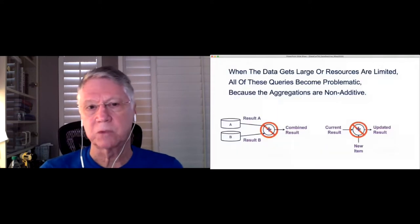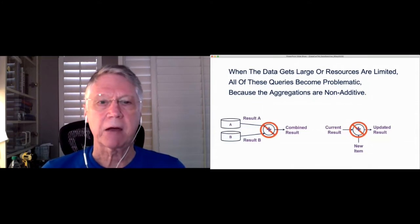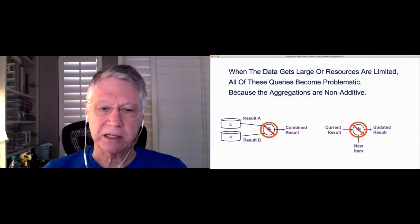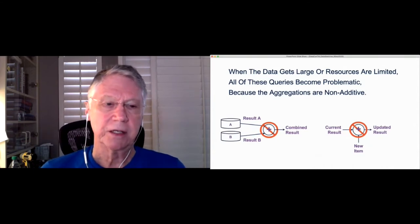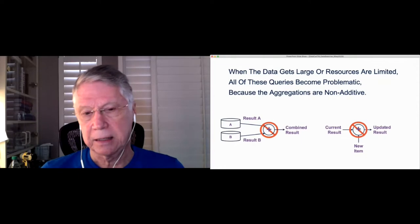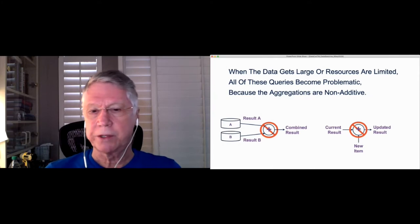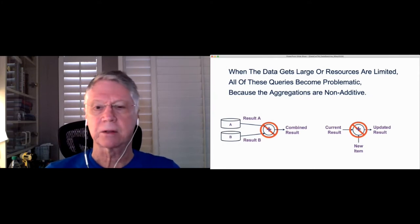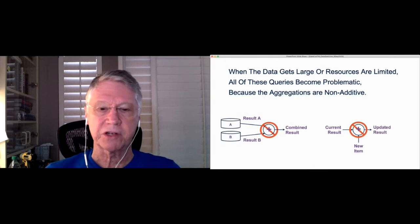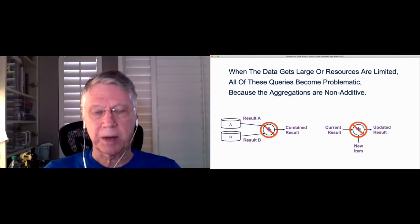When the data gets large or your resources are limited, all of these queries become problematic because the aggregations are non-additive, and that is a particular quality of these aggregations. You can't take some result from a group A and result from a group B and combine those results in a linear fashion. And similarly, you may have some current result, and you want to add one new item to it. You can't update that result easily and obtain the correct answer. And this is due to the non-additive property of all the queries I discussed on the previous page.